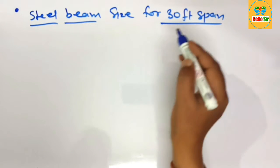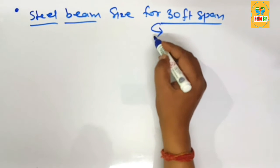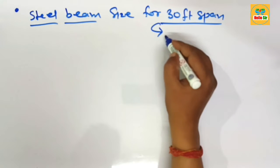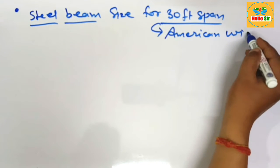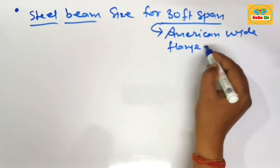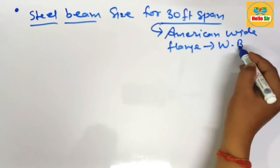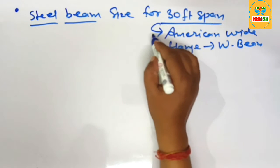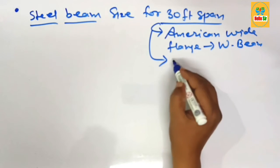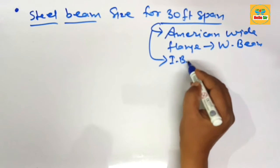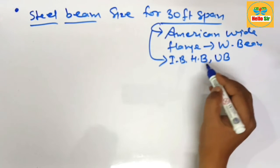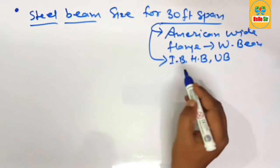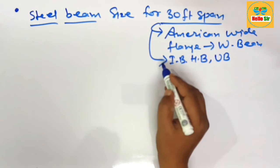As you know that the steel beam is also called American wide flange beam, denoted by W beam. As per another practices it is also called I beam, H beam, and universal beam. These are the several names of steel beam.